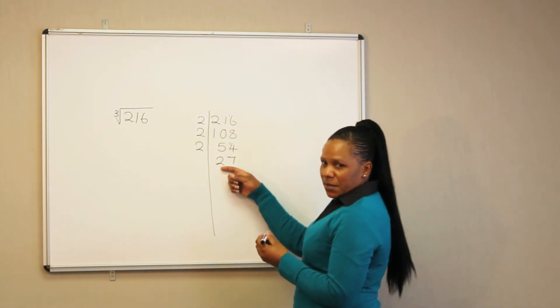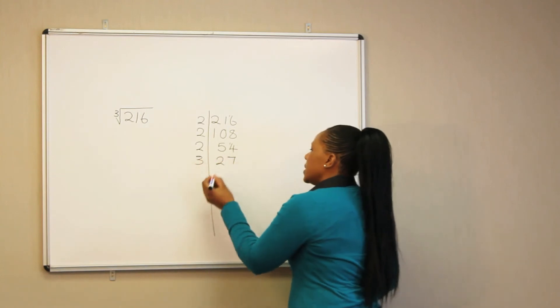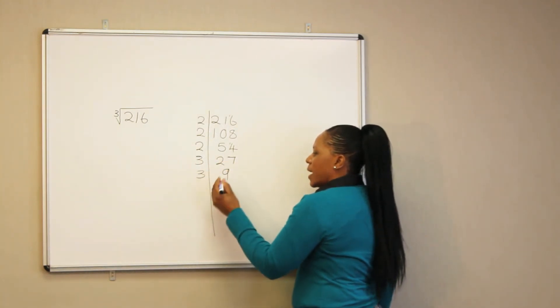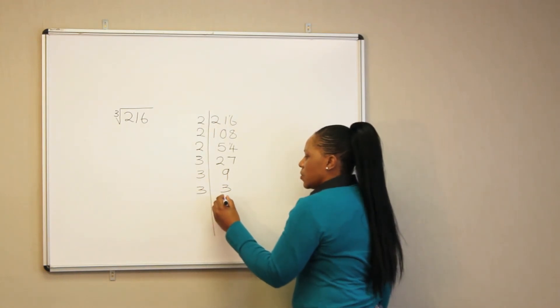3 into 27, it goes 9 times, then 3 into 9 goes in 3 times, and 3 into 3 goes in 1.